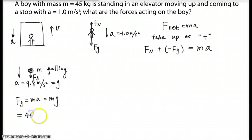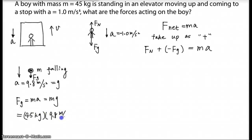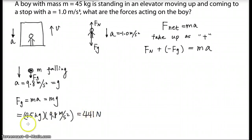So we use mass times g, which is 9.8, to calculate Fg near the Earth. With mass 45 kg times 9.8 m/s², we calculate and get approximately 441 newtons. Rounding to two significant digits gives 440 newtons.